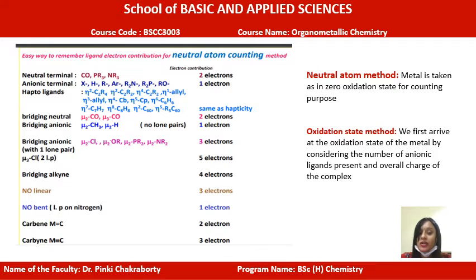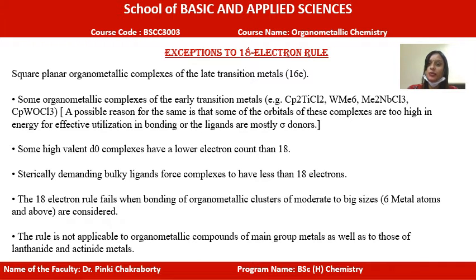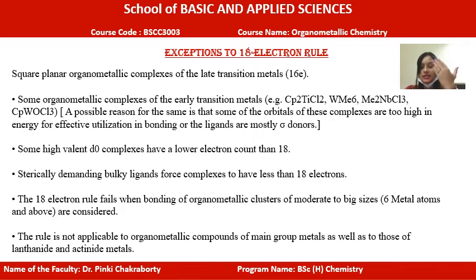There are exceptions where organometallic complexes do not have 18 electrons but are still stable. Some early transition metals are stable even with 16 or 17 electrons because they are attached to certain ligands whose orbitals are of higher energy and cannot coordinate with metal d-orbitals — so the count cannot reach 18. Another reason is that certain ligands are only sigma donors and not pi acceptors, so the total count remains at 16.